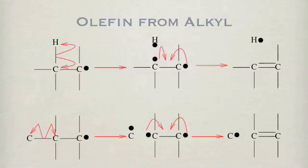This slide shows two possibilities to form a double bond from an alkyl radical. Both lines are essentially the same. On the carbon next to the radical carbon, either a carbon-hydrogen bond or a carbon-carbon bond is broken to form radicals.